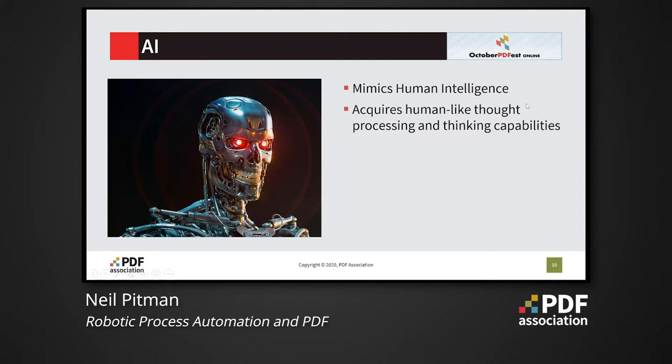Hopefully it is clear that robotic process automation is at the simpler end of the automation spectrum. Whilst we probably won't have to worry about a robo PDF apocalypse just yet, we may need to look at what we need to do to create an automated PDF utopia.